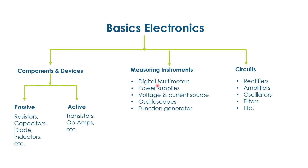Active components include transistors, operational amplifiers, etc. Next are measuring instruments. There are a number of measuring instruments in electronics, such as digital multimeters, power supplies, voltage and current sources, oscilloscopes, and function generators. There are also different types of electronic circuits: rectifiers, amplifiers, oscillators, filters, etc.